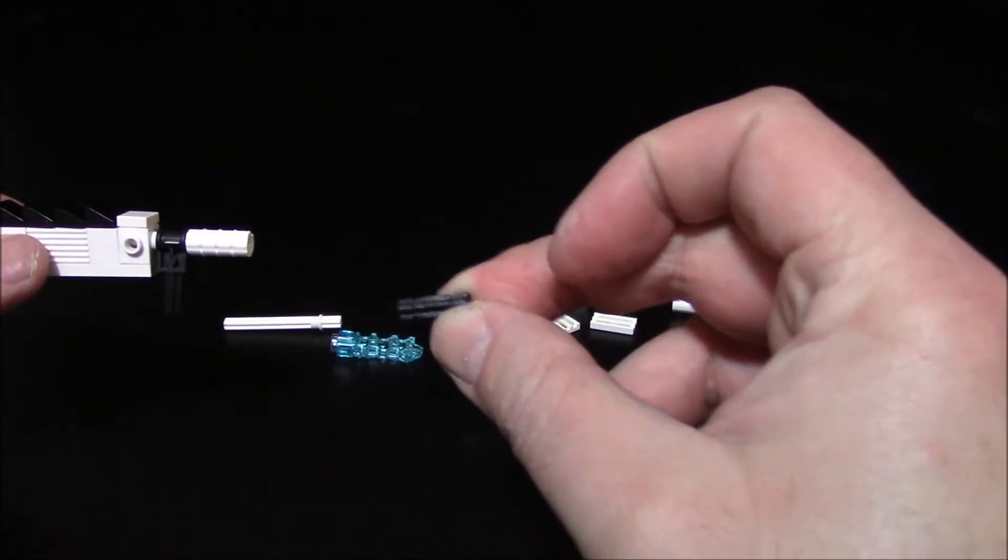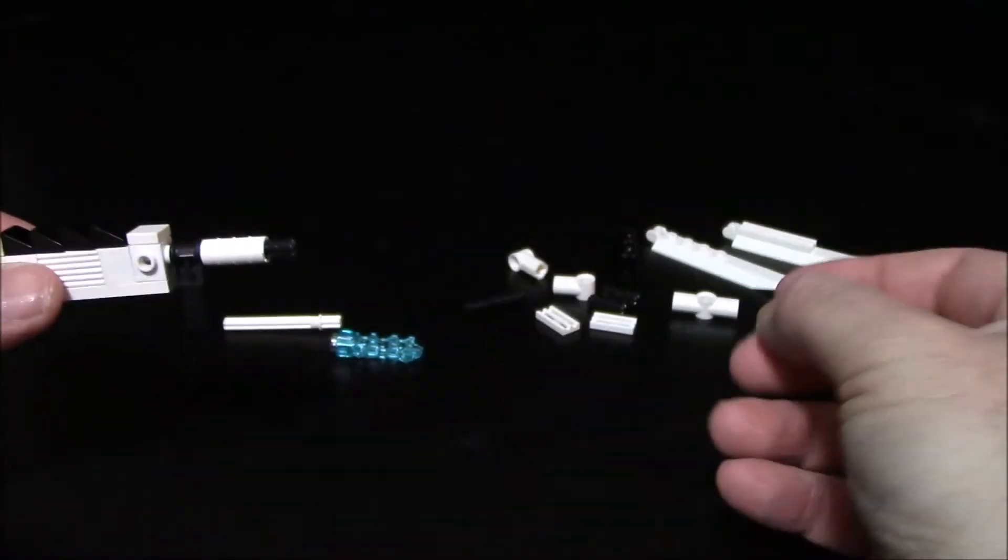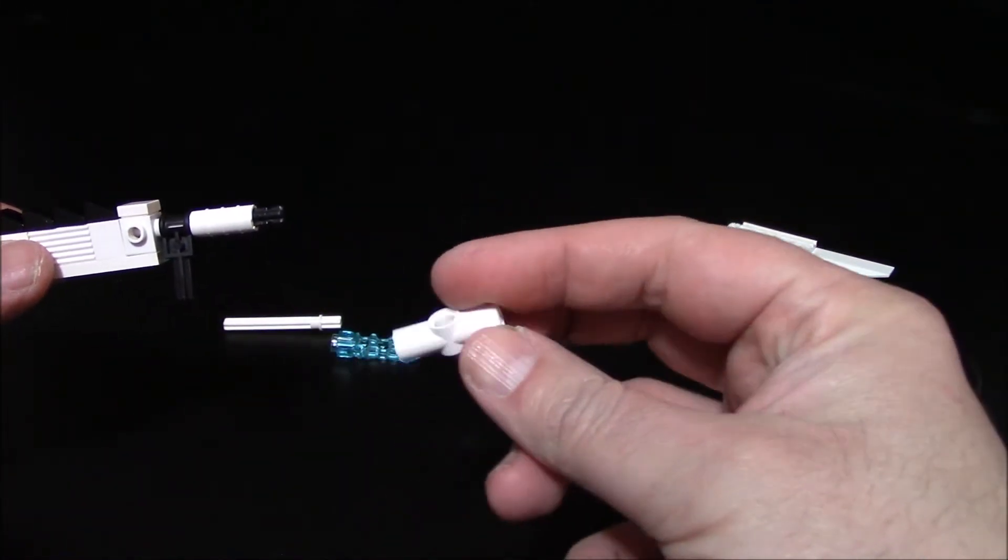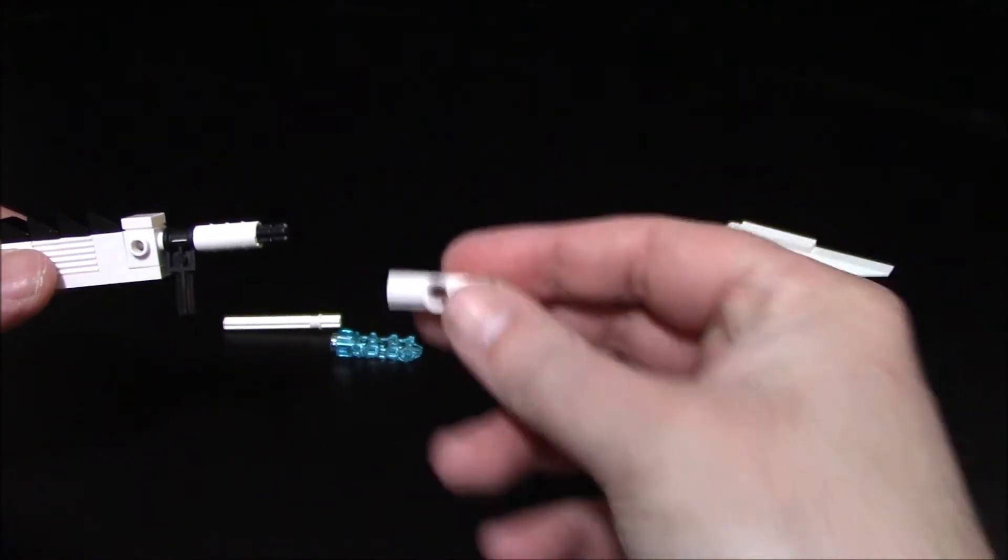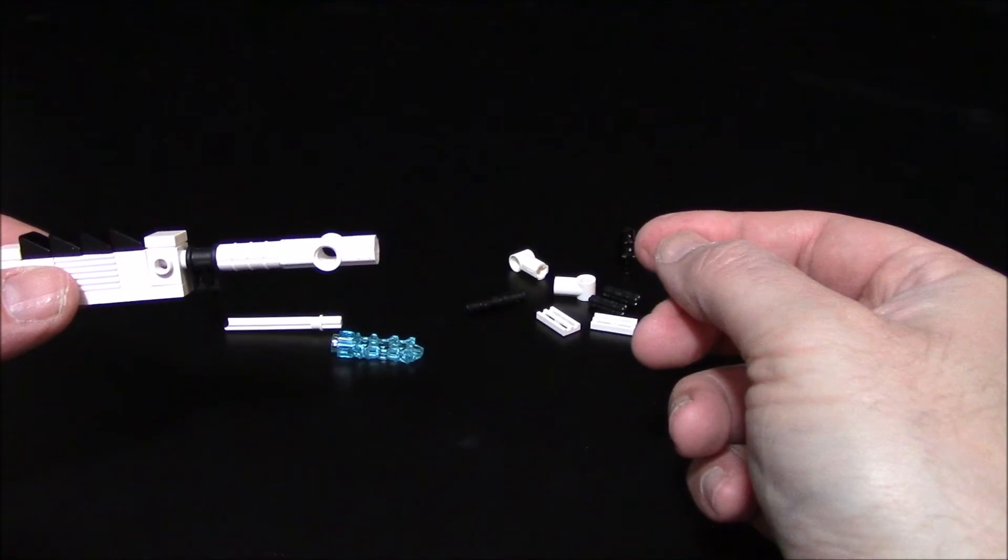Then we're going to put in a two stud long axle like this, and then put in this technic plate, which is about three long, and put it in like so.